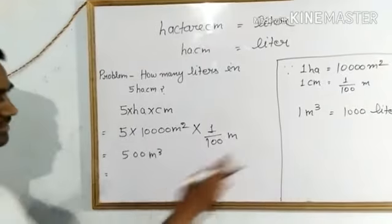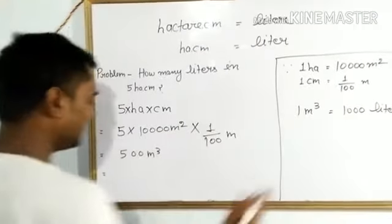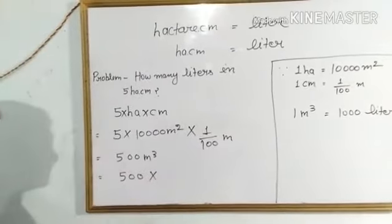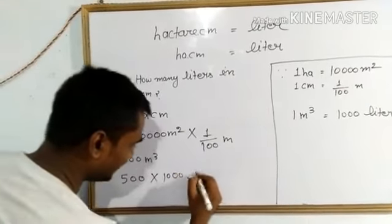Then, we will put cubic meter's value in liters. It will be 500 into 1000 liters.